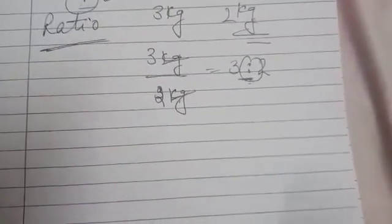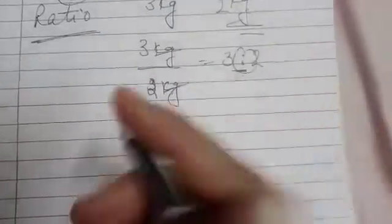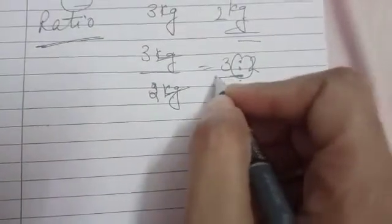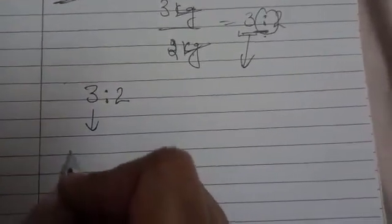In the ratio, I have already written this in the previous videos of class 6. The first term which comes first, that first term is called antecedent.